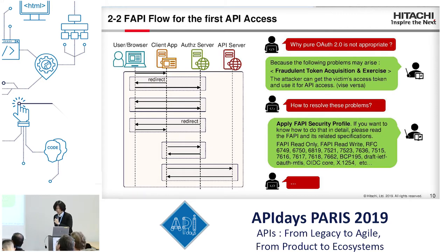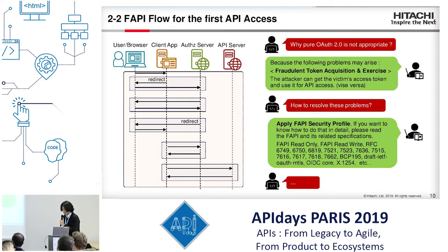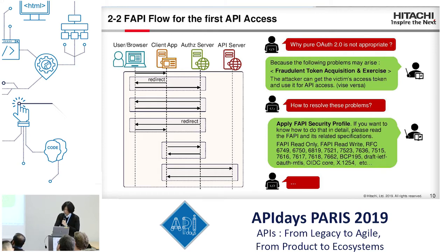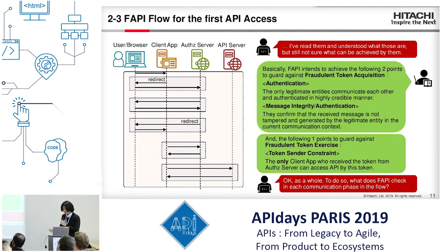To prevent this problem, it would be better to adopt the FAPI security profile. But it is not easy to understand why applying the FAPI security profile prevents this problem, because the FAPI security profile documents tend to describe in detail what we should do but not what we can achieve by following them or why. Therefore, I would like to describe what we can achieve by following this API security profile to prevent this problem. The FAPI security profile achieves two points to guard against fraudulent token acquisition.